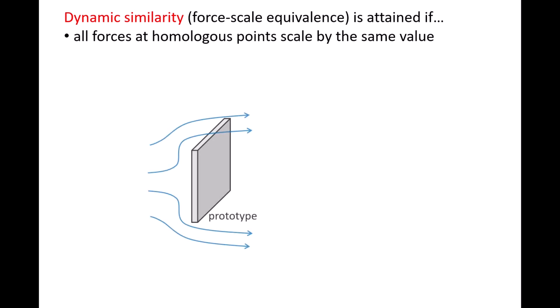The third type of similarity between the model and prototype that we should try to attain is dynamic similarity. Dynamic similarity means that all forces at homologous points are scaled by the same value. For example, here we have flow over a thin rectangular panel. The path taken by a fluid particle over the panel is due to the relative strength of the forces acting on the fluid particle, such as pressure, friction, buoyancy, and gravity, and these forces may vary in space.